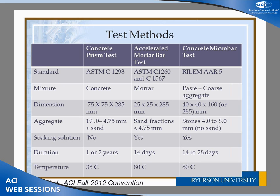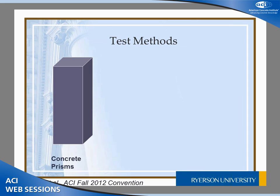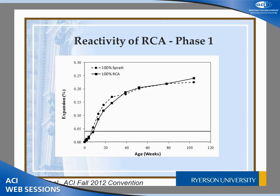These are the key differences between the concrete prism, the accelerated mortar bar, and the concrete microbar. The concrete prism is the most reliable lab testing method — the most reliable overall being an actual structure in service for 20 years, or large exposure blocks that may take 15 years to yield results. In the lab, the concrete prism is most reliable, and those are the results I'm going to present.